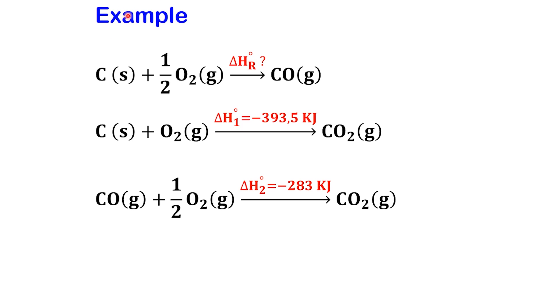Let's see how this works in a real example. Let's find the enthalpy change for forming carbon monoxide. We can't measure it directly, but thanks to Hess's Law we can figure it out using other known reactions. Here's what we know. First, when carbon reacts with oxygen to form carbon dioxide, the reaction releases 393.5 kJ of energy.